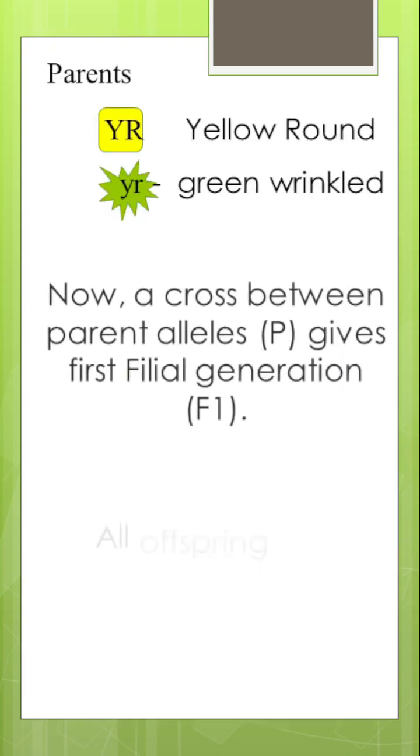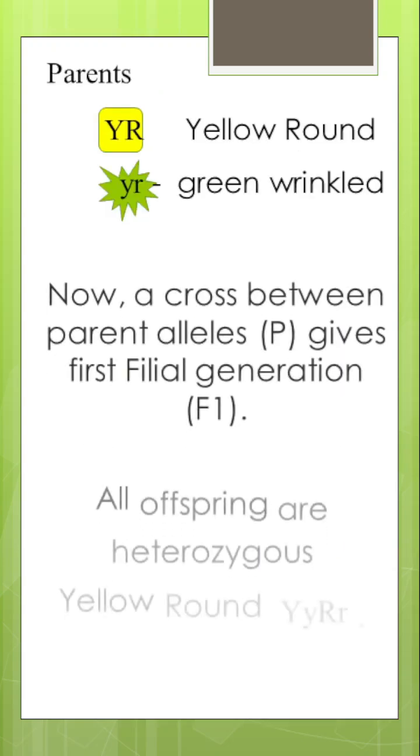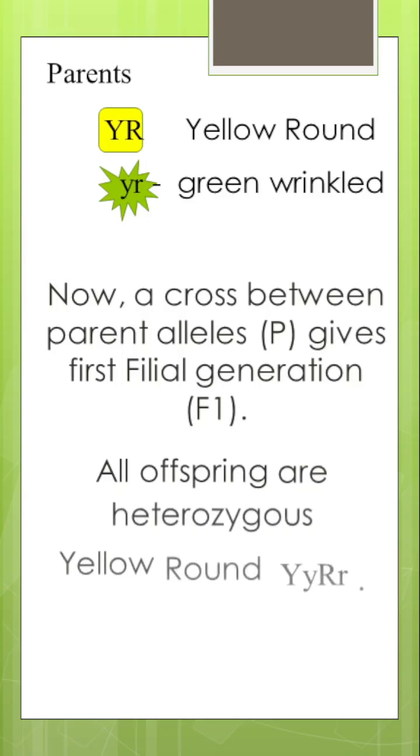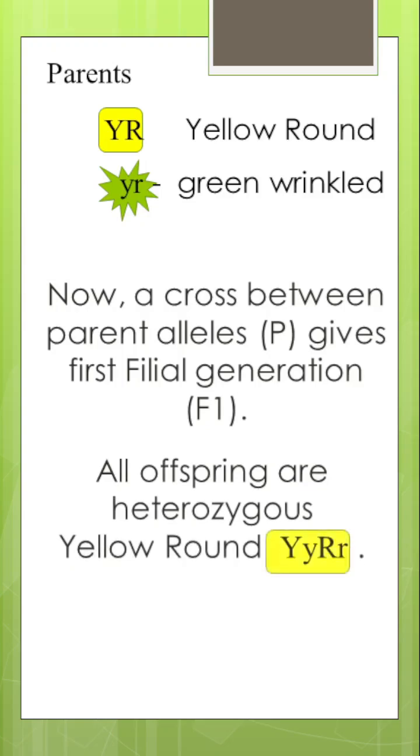After the homozygous parents — yellow round crosses with green wrinkled — all the first generation end up being heterozygous yellow and round.